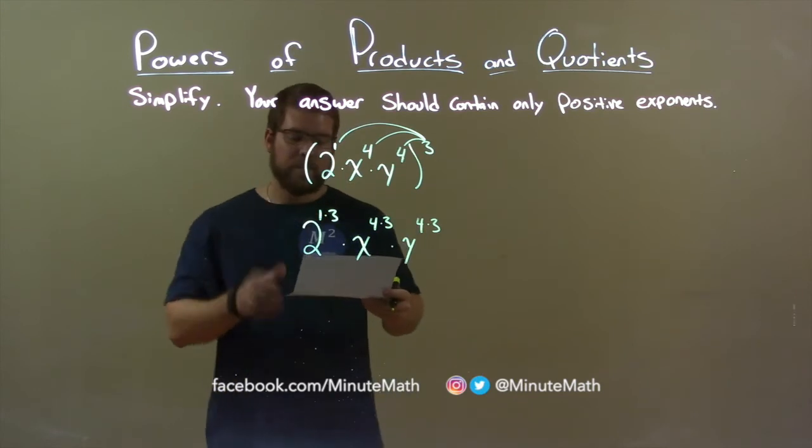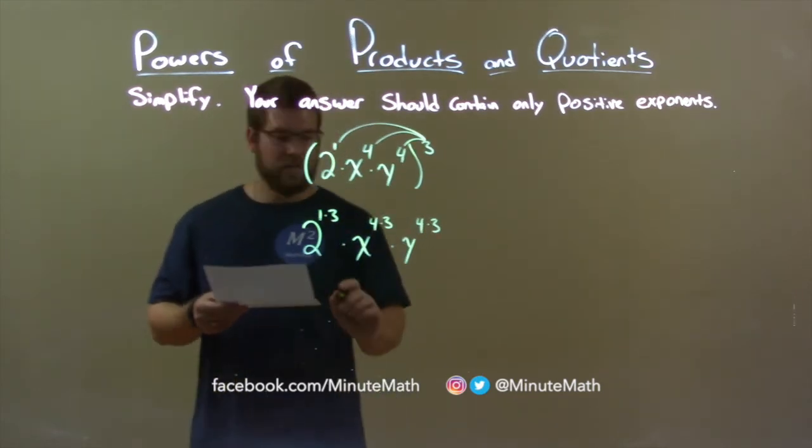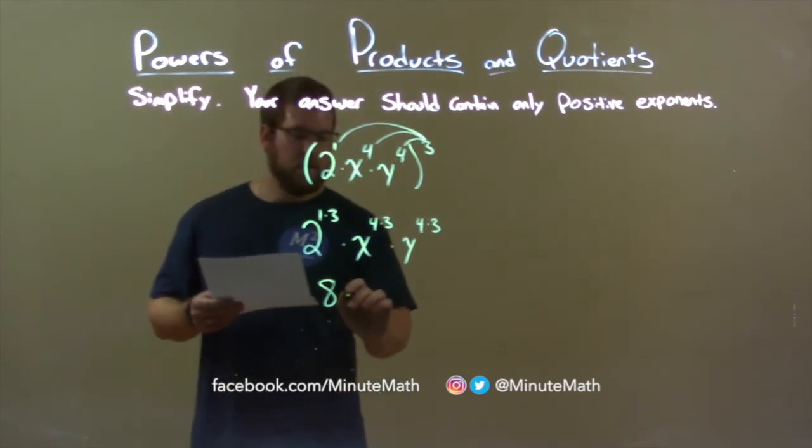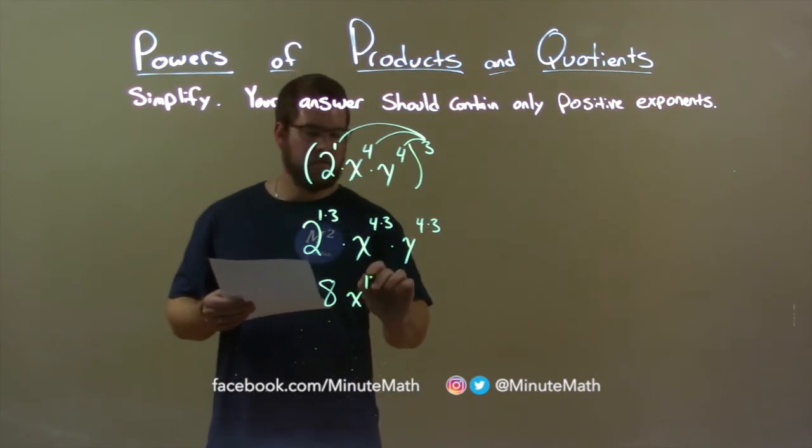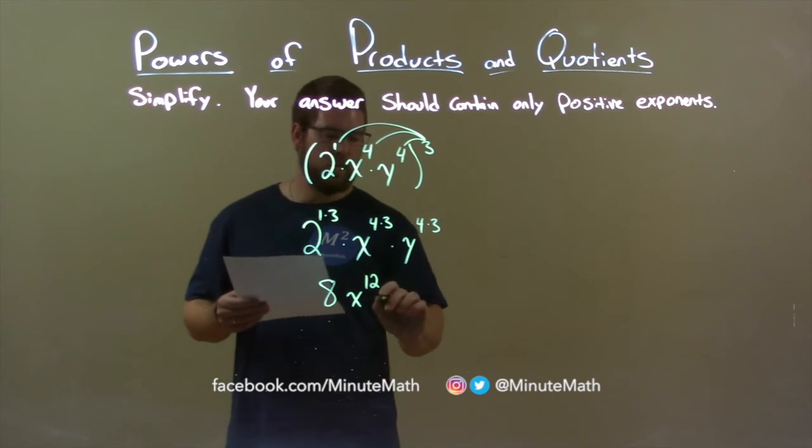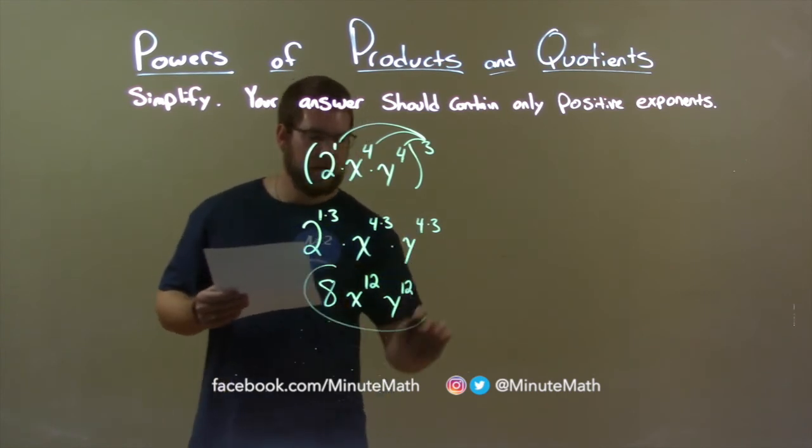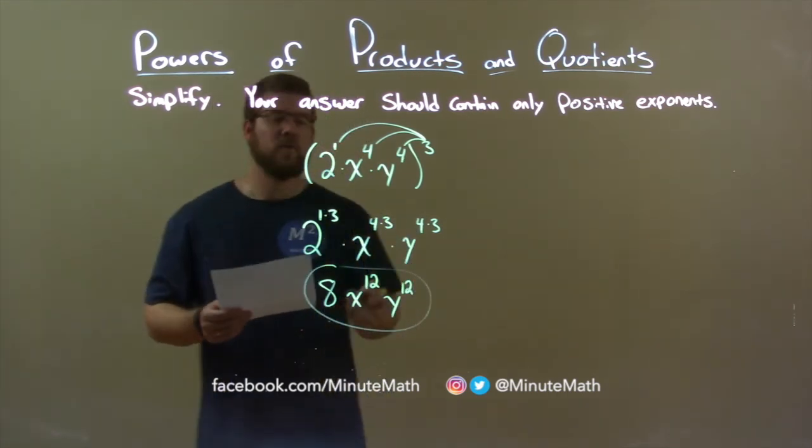1 times 3 is 3, and 2 to the 3rd power is 8. x comes down, 4 times 3 is 12, so we have x to the 12th power, and the same thing with the y. 4 times 3 is 12, and so my final answer is 8x to the 12th power, y to the 12th power.